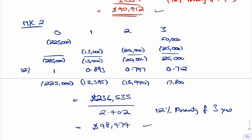Would you rather pay 90,712 or would you rather pay 98,474? You'd rather pay 90,712. And so, therefore, the one that should be purchased is machine 1. Hope it helped, folks.